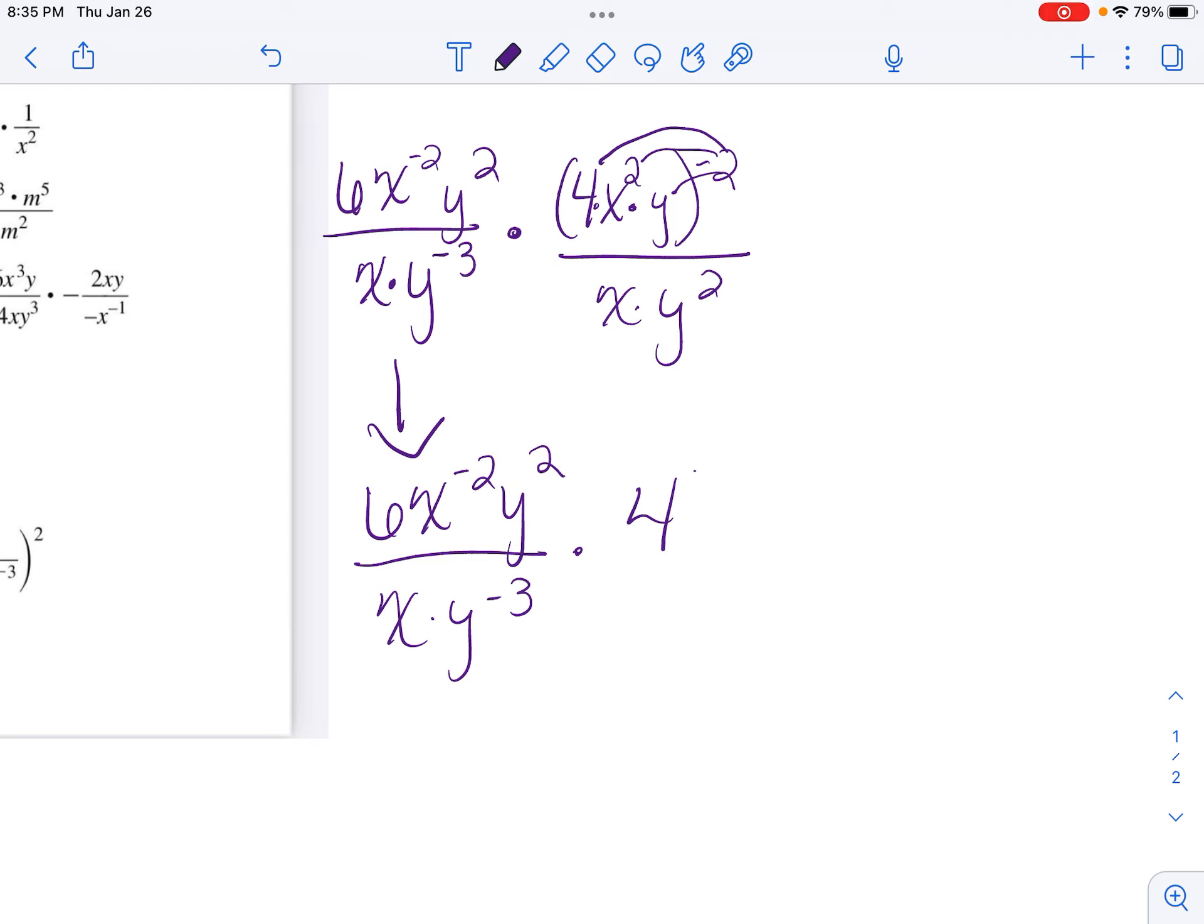So I have 4 to the negative 2, x to the negative 4, because 2 times negative 2 is negative 4, and y to the negative 2, because negative 2 times 1 is negative 2. Then I'm going to bring down what's on the bottom.